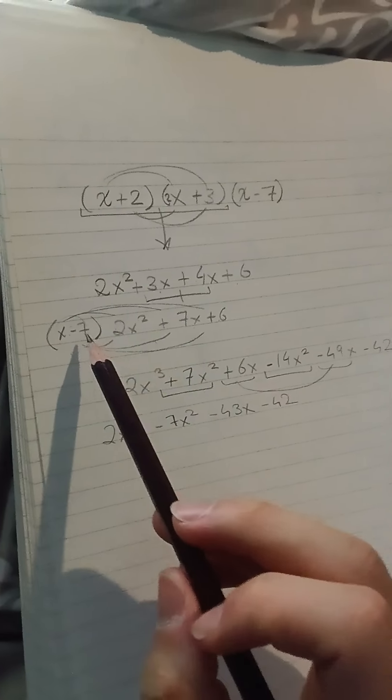combine like terms. 7x squared and minus 14x squared is going to give you negative 7x squared, plus 6x and minus 49x is going to give you minus 43x. Minus 42 and 2x cubed have no other like terms, so this is going to be your expansion.